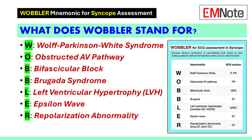The WOBBLER mnemonic stands for seven key components that clinicians should assess during the evaluation of an electrocardiogram. These components include Wolff-Parkinson-White syndrome, obstructed atrioventricular pathway, bifascicular block, Brugada syndrome, left ventricular hypertrophy, epsilon wave, and repolarization abnormality. Each component represents a specific condition that may contribute to syncope and requires careful analysis.